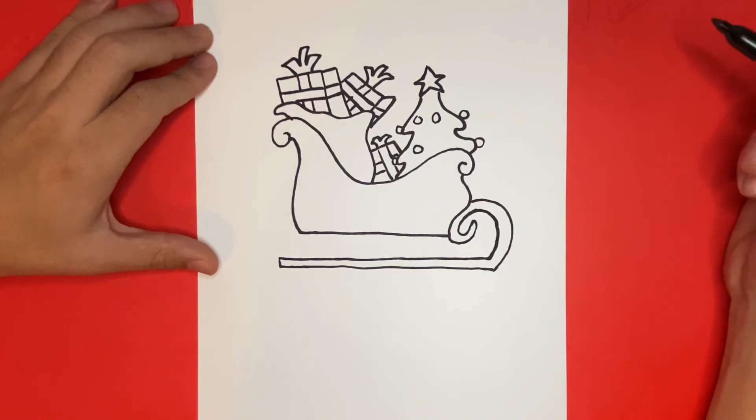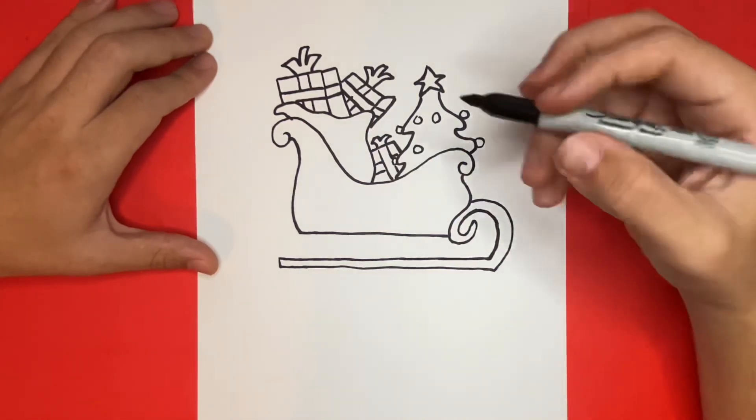Last but not least we will use two small rectangular shapes to connect the sleigh down to that long rectangular shape on the bottom.